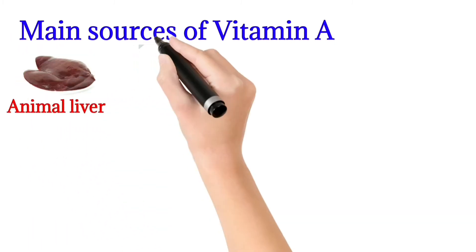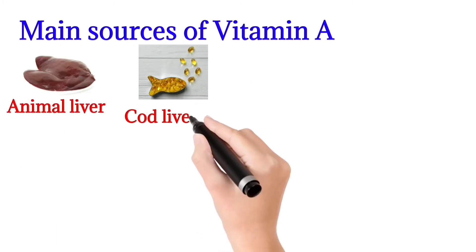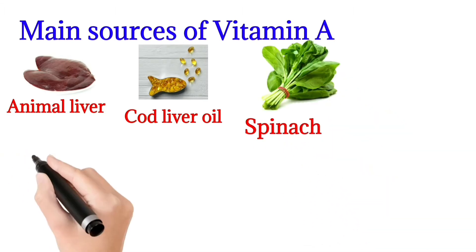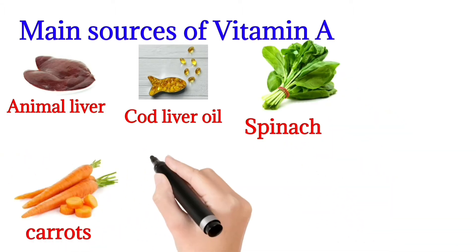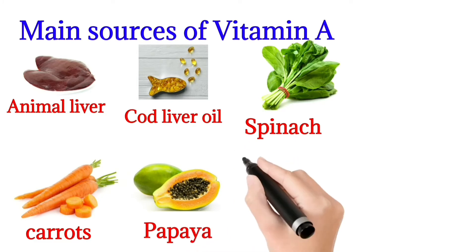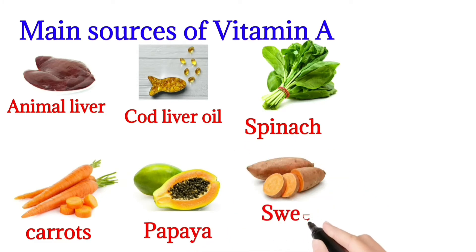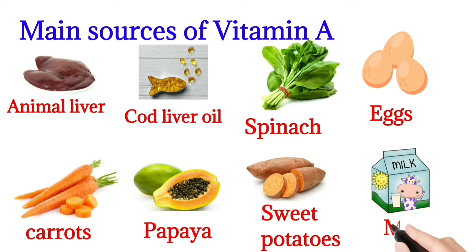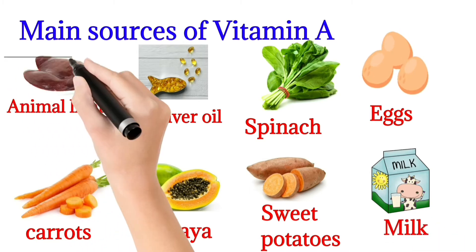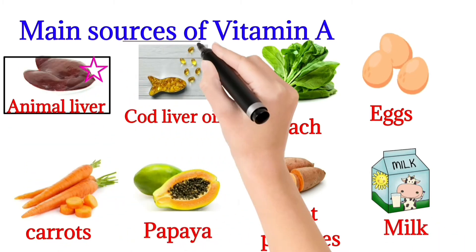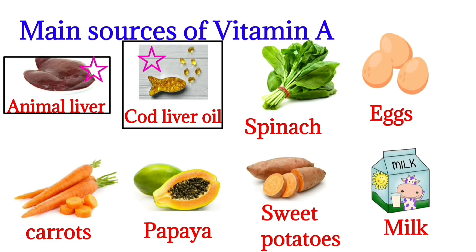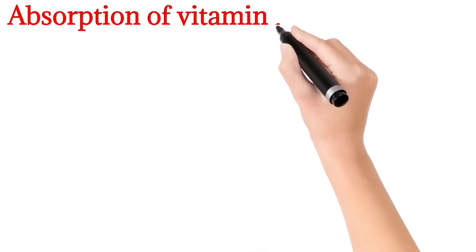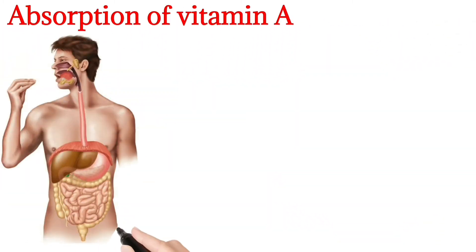Sources of Vitamin A include animal liver, cod liver oil, spinach, carrots, papaya, sweet potatoes, eggs, and milk. The most common sources are animal liver and cod liver oil.